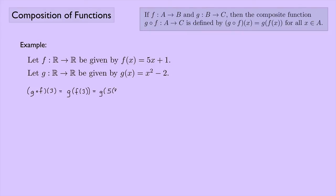This is 5 times 3 plus 1. That's easy to calculate. 5 times 3 is 15, plus 1 is 16. And what's g of 16? It's going to be 16 squared minus 2. And 16 squared, that's 256 minus 2. And so we get 254.